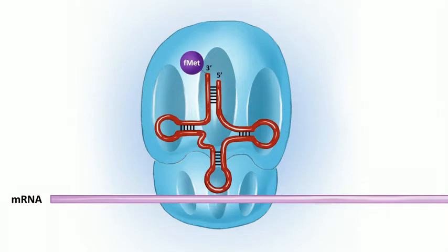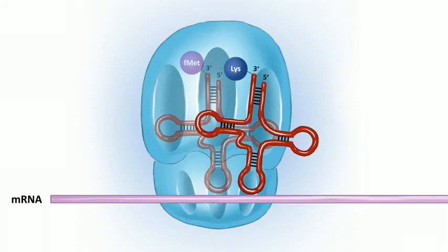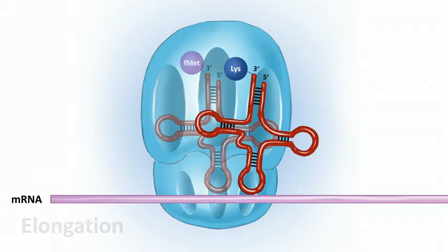The first tRNA — the f-methionine tRNA — binds at the P site rather than the A site, but all subsequent aminoacyl-tRNAs bind at the A site. That's initiation. Now we're ready to move on to the next phase, elongation, where we start putting amino acids together into a long chain.